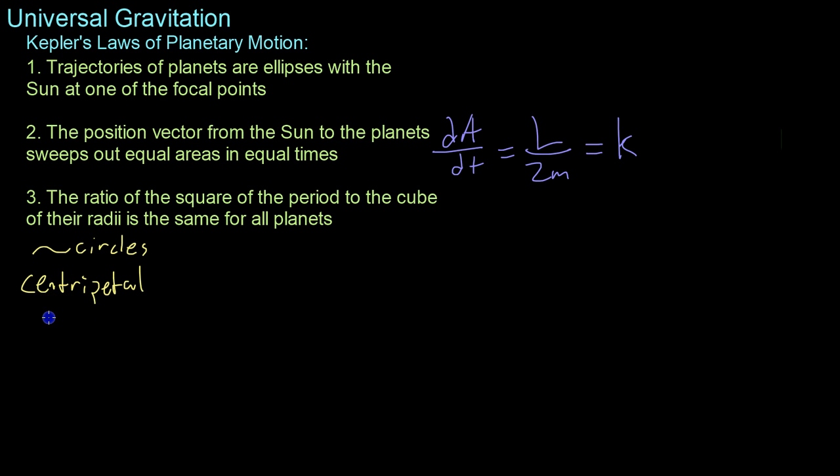because the gravitational force is what is keeping the planets moving in their circular orbits. Now, with that said, we can set our known equation for the centripetal force equal to the known equation for the gravitational force. In this case, we have mv squared over r equals, you know, g big M, we'll call the mass of the sun. Little m is the mass of the planet over r squared. These little m's will cancel out, as will one r term.